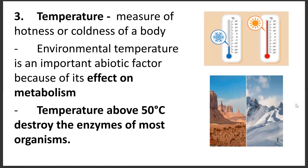The next abiotic factor would be temperature. It is a measure of the hotness or coldness of a body. Environmental temperature is an important abiotic factor because of its effect on metabolism. Temperature above 50 degrees Celsius can denature the enzymes of most organisms. For example, during winter, polar bears hibernate in order to minimize metabolism and survive the cold.